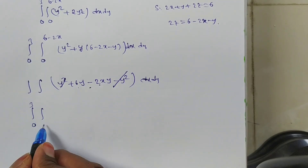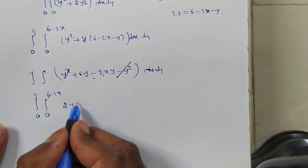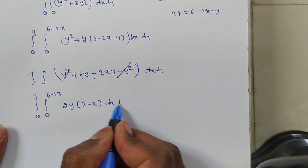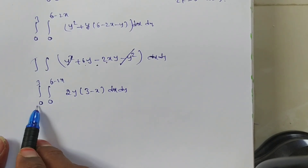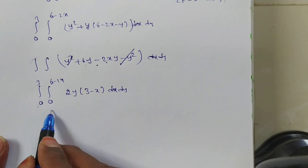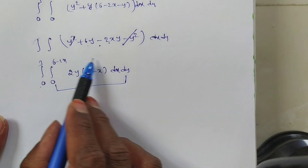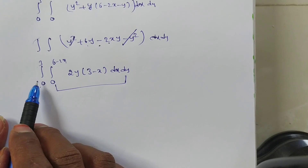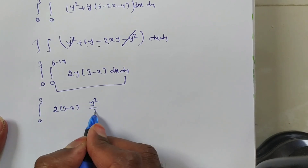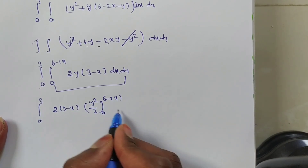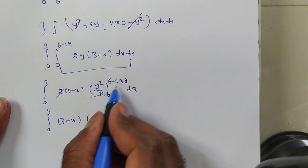Taking 2y common: 2y(3 − x). So the integral is ∫₀³ ∫₀^(6−2x) 2y(3 − x) dy dx. Integrating with respect to y first (dependent limit): y integrates to y²/2, giving 2(3 − x) · [y²/2] from 0 to 6 − 2x. The 2 and 2 cancel, leaving ∫₀³ (3 − x)(6 − 2x)² dx.